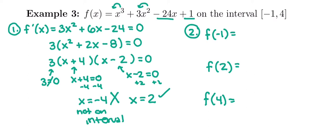So I'm going to plug into the original function to compare y values. If we plug in negative 1 to this big original function, we do negative 1 cubed plus 3 times negative 1 squared minus 24 times negative 1 plus 1, and we get 27. I do the same thing, I plug in 2 to the original function, and that gives me negative 27. And then if we plug in 4 to the original function, we're going to get 17.